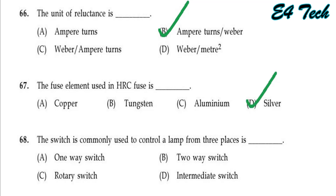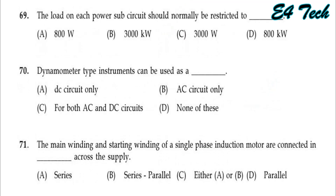The switch used to control a lamp from three places: the options are one-way switch, two-way switch, rotary switch, and intermediate switch. The answer is intermediate switch. Option D.